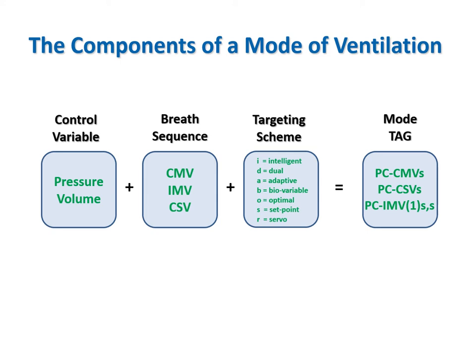The TAG summarizes the components of a mode. When there is an IMV mode, there are at least two targeting schemes indicated—the first is the targeting scheme for mandatory breaths and the second is for spontaneous breaths. Some modes have multiple targeting schemes for both kinds of breaths.